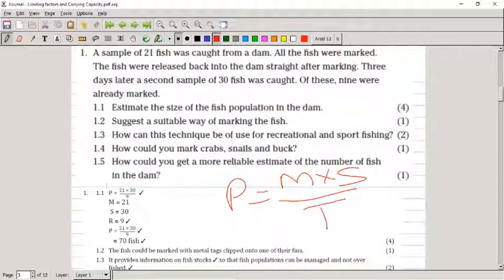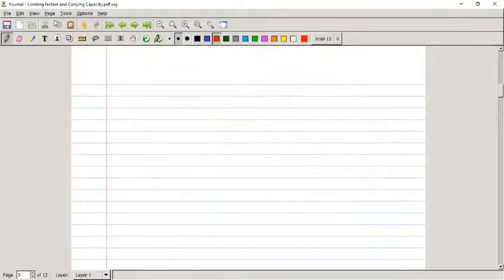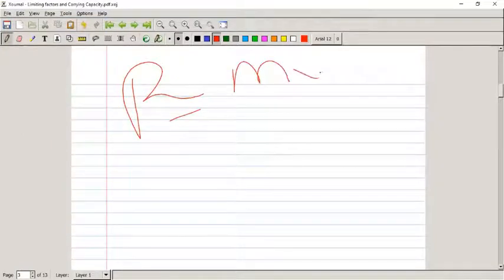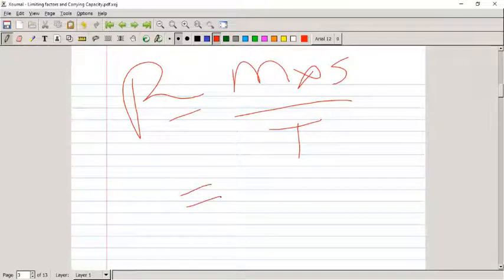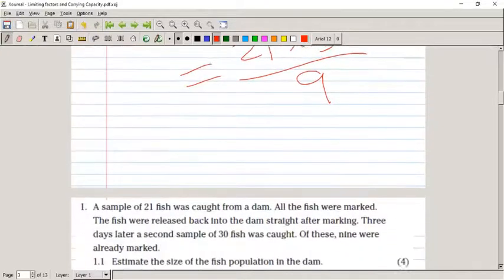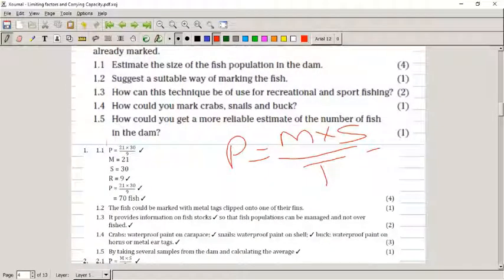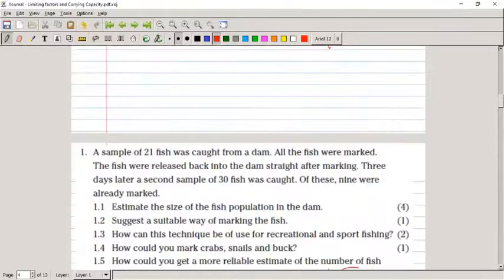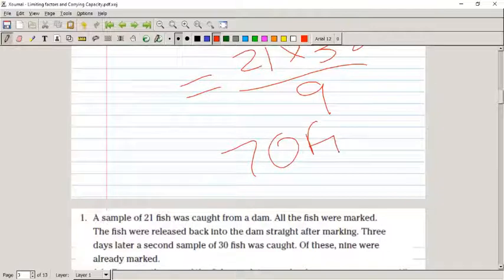Let me just create a new page. P equals M times S divided by T. How many were marked in the first sample? It was 21. Second sample, that's 30, divided by 9 caught in the second sample. If we calculate that, we get 70 fish. So you get in the pond, you get 70 fish. And that's an estimate.